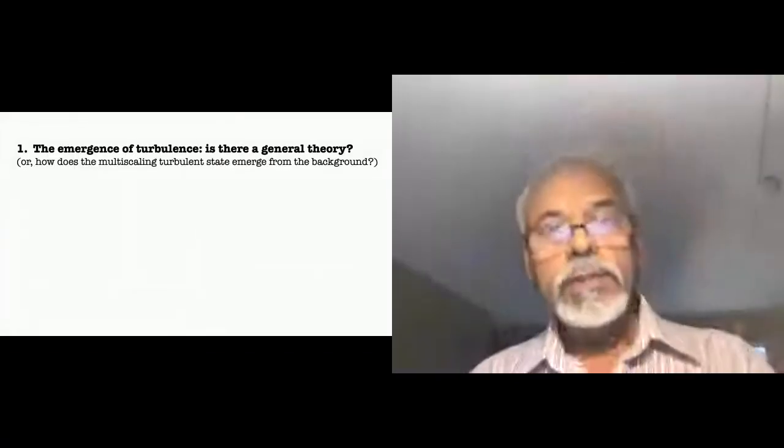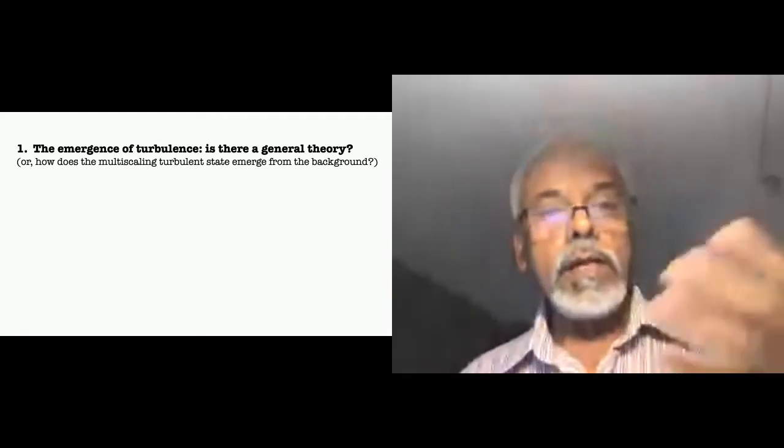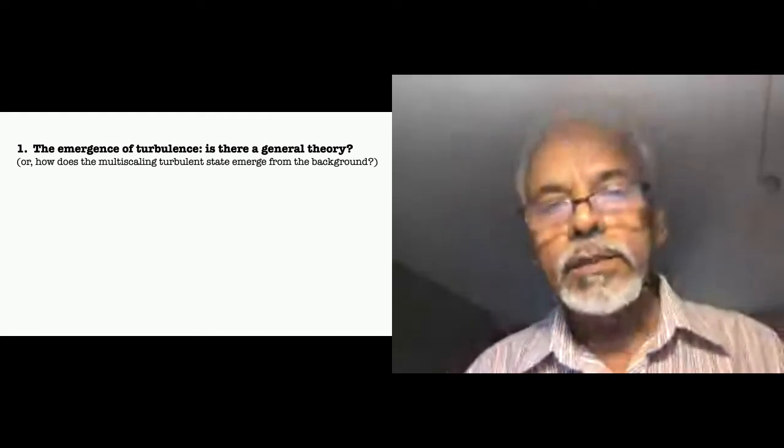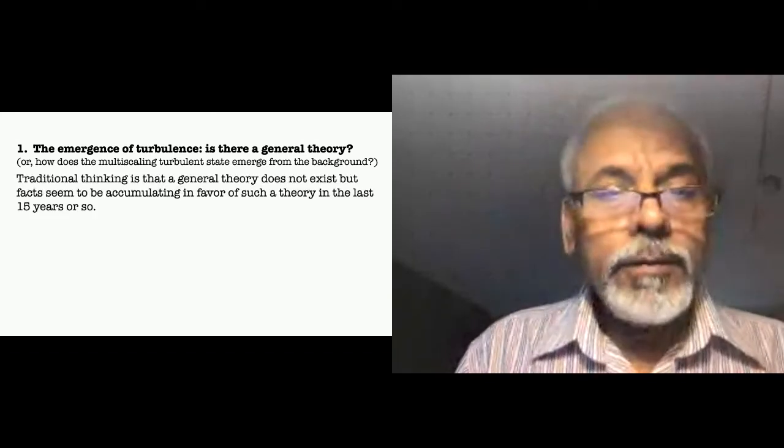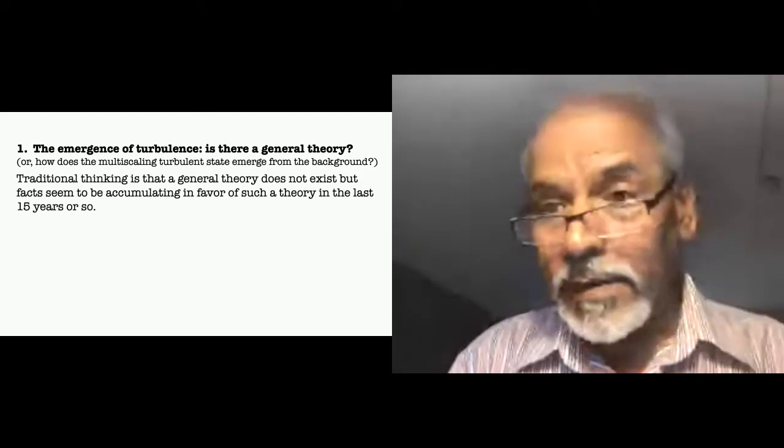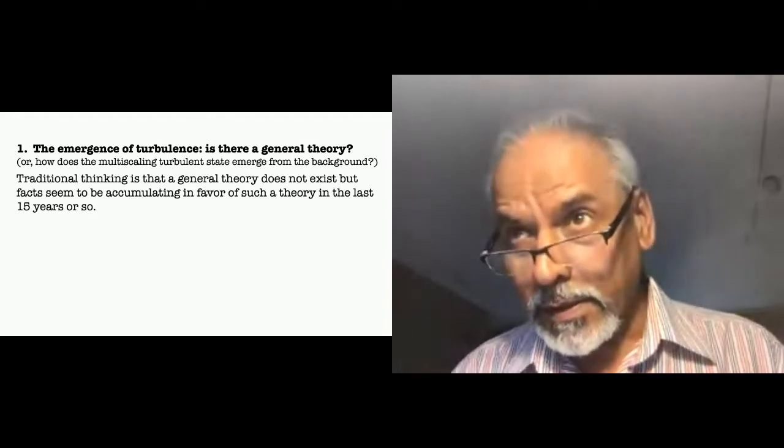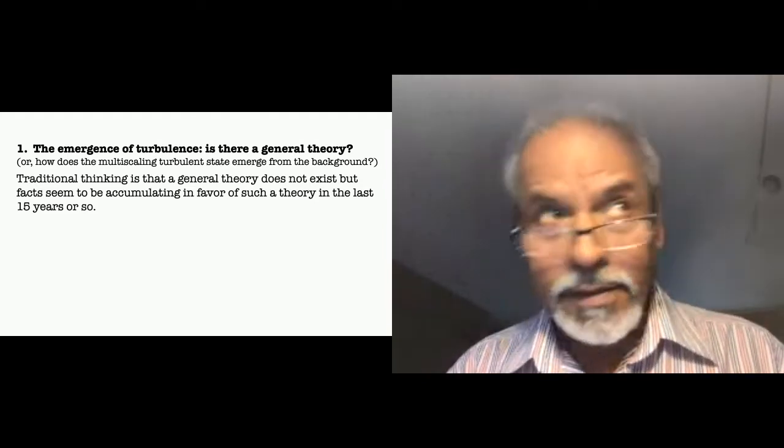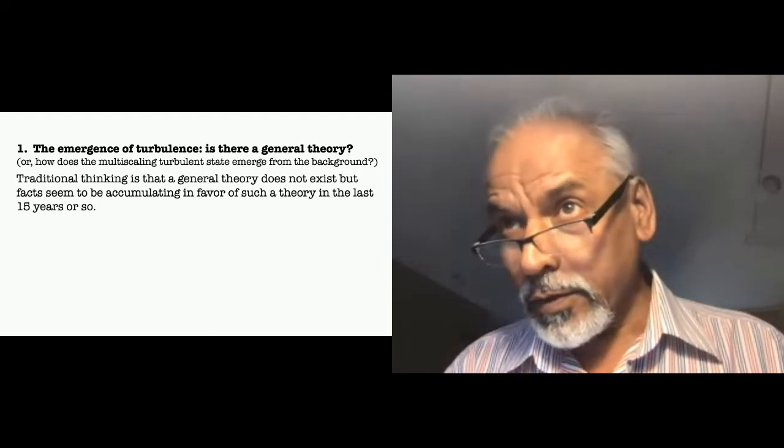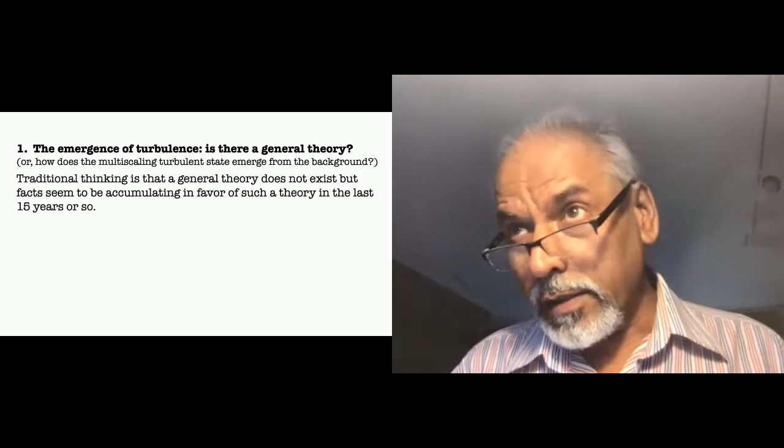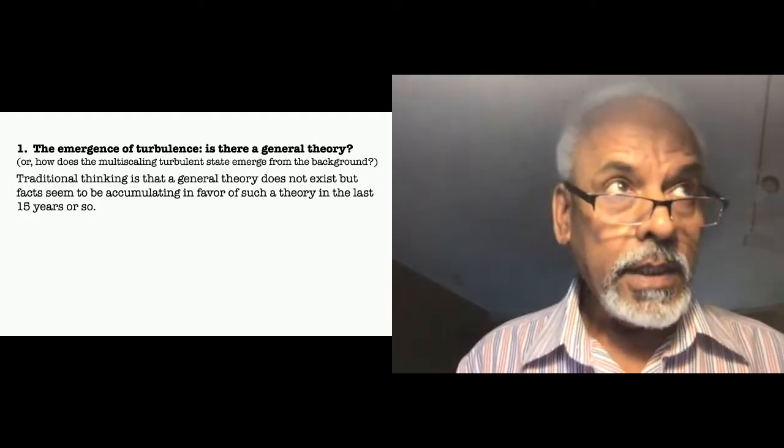Now let's go to the first topic, the emergence of turbulence. So the question one should ask, is there a general theory or not? I have redefined the problem, or the question is how does a multi-scaling turbulent state develop from the background. Now, in fact, the traditional thinking is that such a general theory does not exist. Because if you think of turbulence as the ultimate state of successive transitions and instabilities, each flow has certain characteristic instabilities. And you might therefore regard that each one is separate and distinct. And you will have a different route to turbulence all the time. But of course, instabilities do not lead to turbulence. There is always a missing gap between instabilities and turbulence.